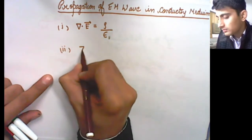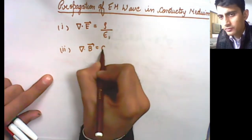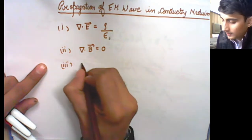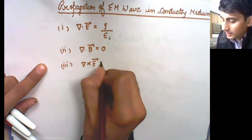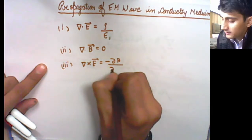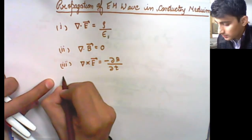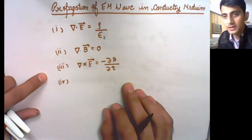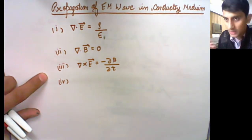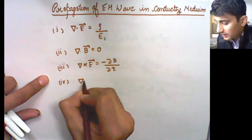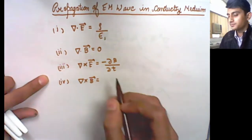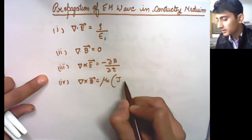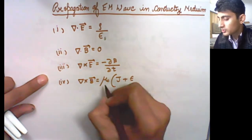The second equation, del dot B (divergence of magnetic field), will still be zero. The third one is del cross E equals minus del B by del T. For the fourth equation, since charges are present in conducting media and a current can flow due to voltage difference, we will have del cross B equals mu naught J.